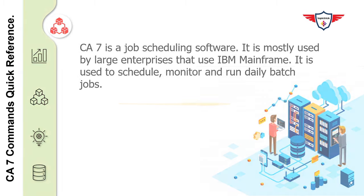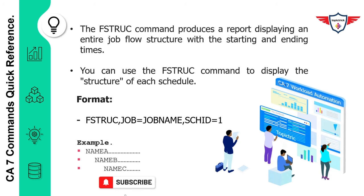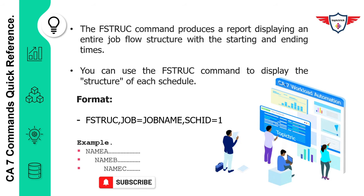Now let's focus on the definition of the CA7 F-STRUCF command. The F-STRUCF command is generally used as a report displaying an entire job flow structure. You can use the F-STRUCF command to display the structure of each schedule.